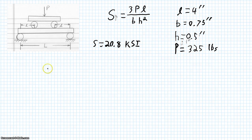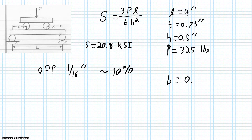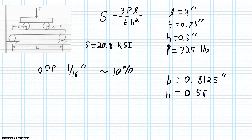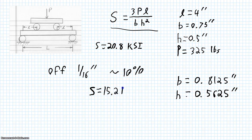But what happens if our measurements are off by one-sixteenth of an inch? Maybe the saw blade was set one-sixteenth of an inch too wide — that's roughly 10% of our base and our height value. Our new base would actually be 13-sixteenths, or 0.8125 inches, and our new height would be 9-sixteenths, or 0.5625 inches. Plugging those numbers into our formula, our ultimate strength comes out to 15.2 ksi.